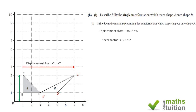Let's verify with point D: the displacement from D to D' is 2 units, and the distance from the x-axis to D is 1. So 2 ÷ 1 = 2, confirming the shear factor is 2. For point E: displacement from E to E' is 2 units, y-coordinate of E is 1, so 2 ÷ 1 = 2 again. The transformation from A to B is a shear with shear factor 2, x-axis invariant.